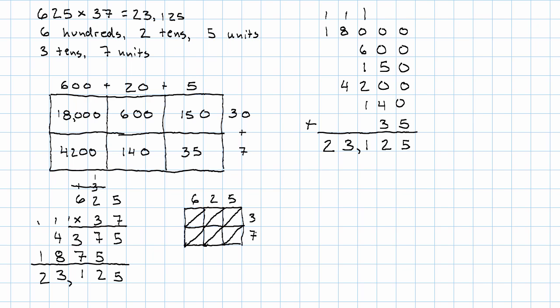Again we're multiplying each pair of digits. 6 times 3 is 18. 3 times 2 is 6. 5 times 3 is 15. 6 times 7 is 42. 2 times 7 is 14. 5 times 7 is 35.